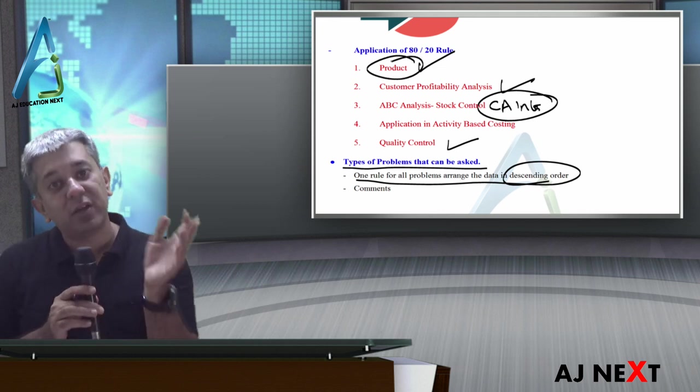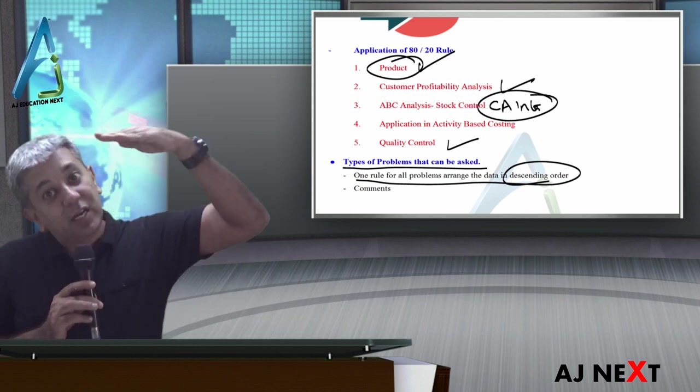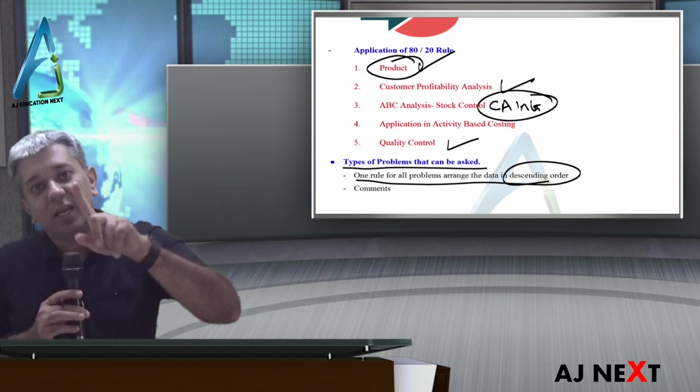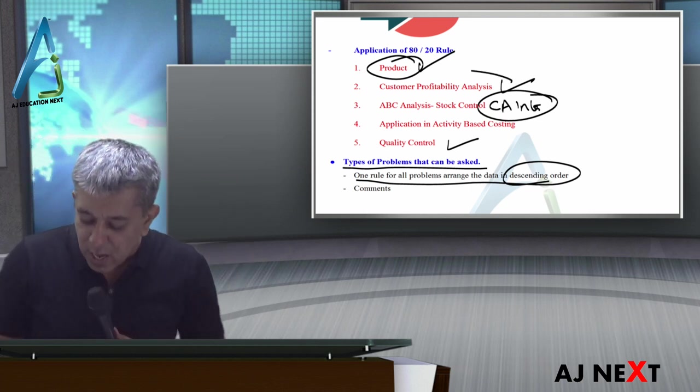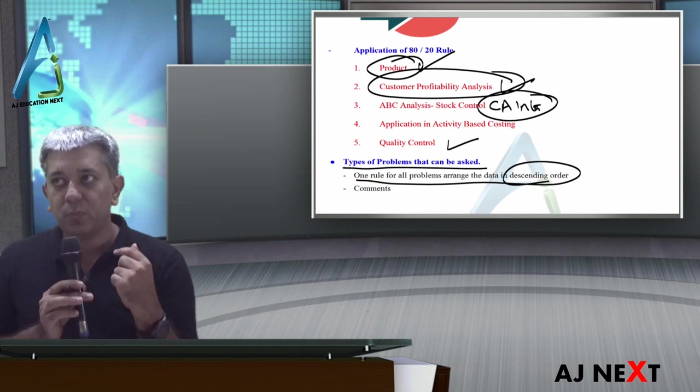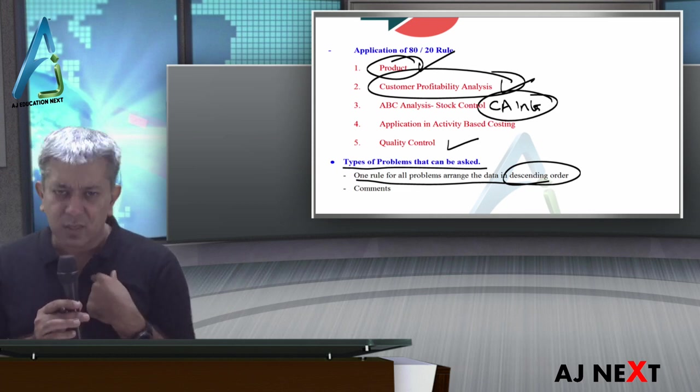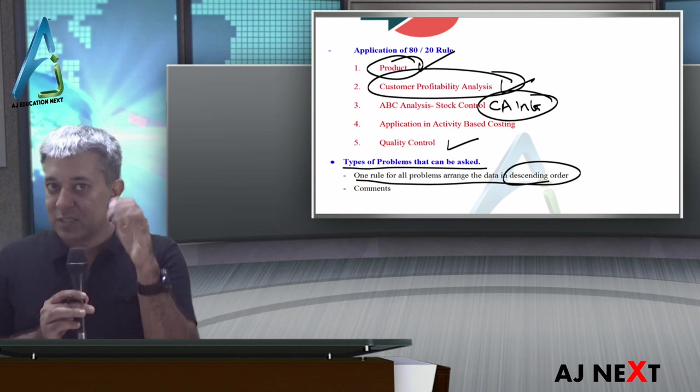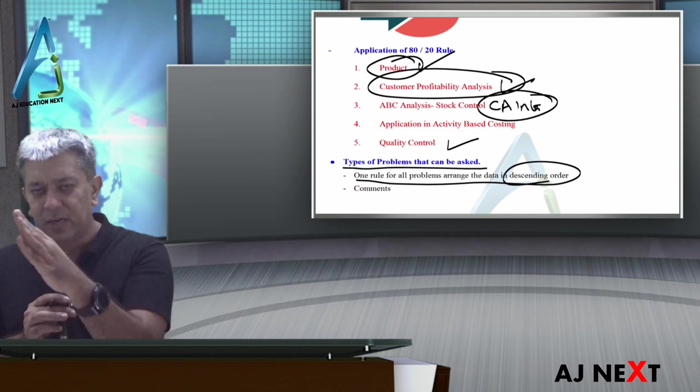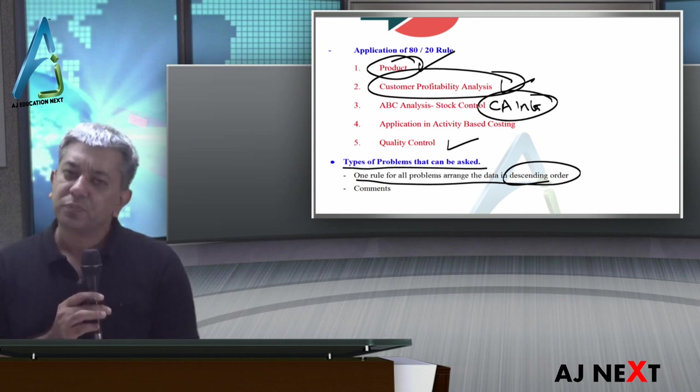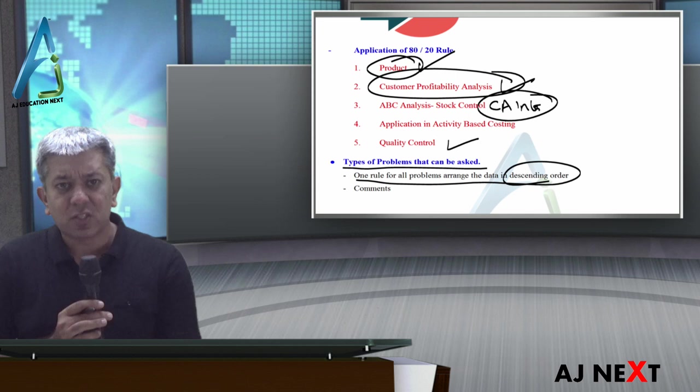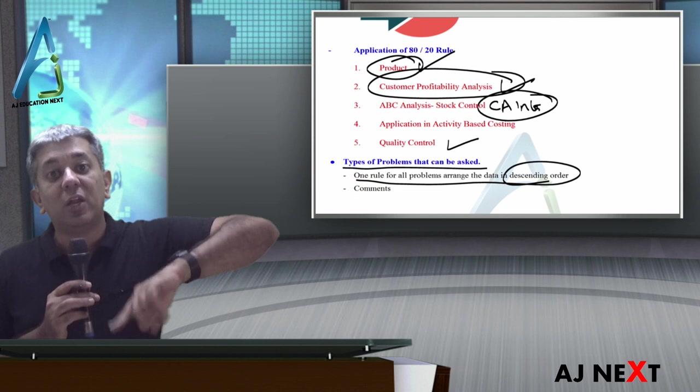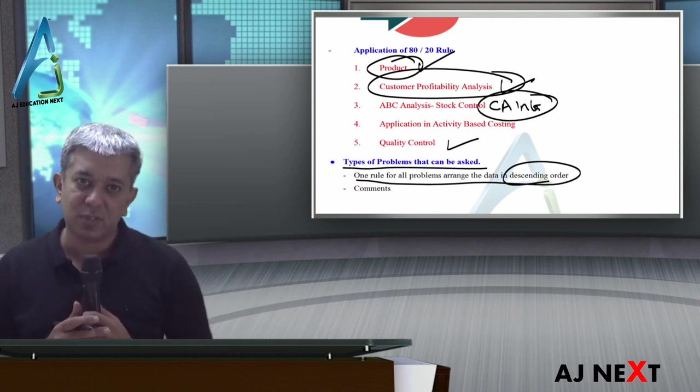Same thing: identify the products which constitute 80% revenue or profit. For that, you have to convert revenue or profit into descending order. You have different types of customers and want to know which customers to give more importance to. Like in activity-based costing, you had wholesalers and retailers etc. So just check once. You have to know which customer should be given good importance. Try to arrange the revenue from them in descending order. You'll know which customers are important.